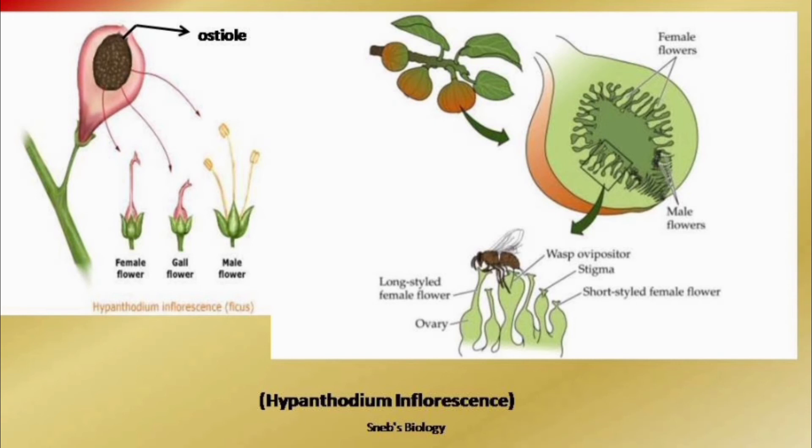This complete structure is called hypanthodium inflorescence. Three types of flowers are present: the neck part has male flowers, and the lower part has female flowers — both sterile and fertile. The axis to which the flowers are attached has become a swollen, vase-like structure known as the receptacle.